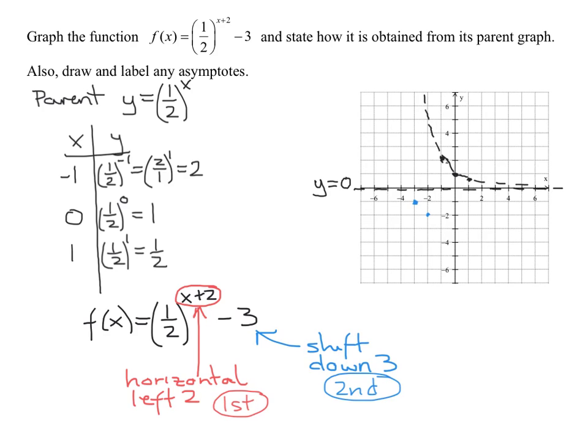And then my other point is going to be here at 1, 1, 2, 3. And it's going to go left 2, down 1, 2, 3. So it's going to be at negative 1, negative 2.5. Right about there. So there are my three points.